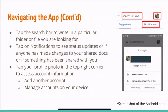You can tap on the search bar at the top of the screen and search for whatever folder or file you are looking for by name. You can tap on notifications to see status updates — if anyone has made changes to your shared documents or if something has been shared with you. Tapping on your profile in the top right-hand corner lets you access your account information, add another account, or manage accounts on your device.